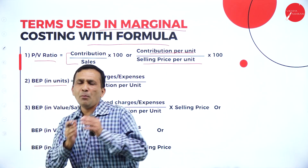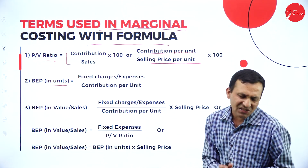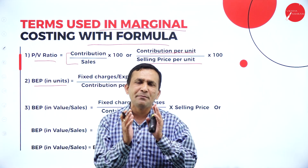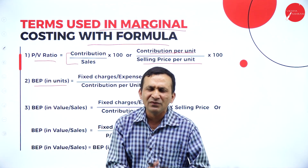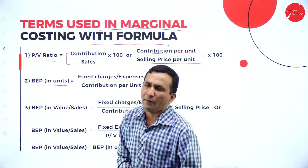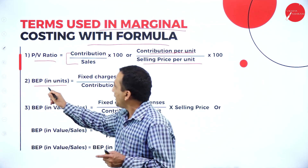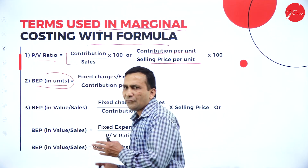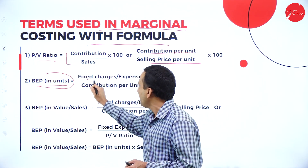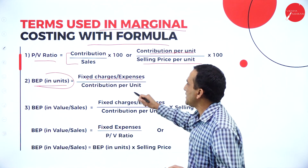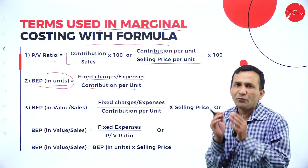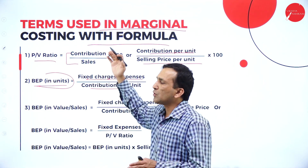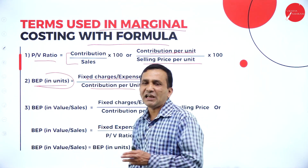Moving to the breakeven point — before understanding breakeven in units, you must understand that at the breakeven point there is no profit and no loss. The breakeven in units refers to how much quantity you are producing. The formula is simple: numerator is fixed charges or fixed expense, and denominator is contribution per unit.